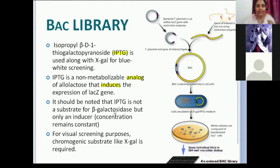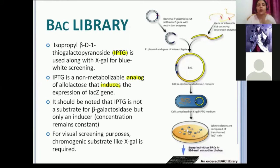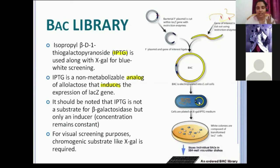Since IPTG is not broken down, the bacteria keeps getting the signal that IPTG is still in the media, and keeps making more and more beta-galactosidase. In the process of making beta-galactosidase, multiple copies are produced. But we don't have a functional LacZ, so beta-galactosidase enzyme won't be produced by those having a clone — but multiple copies of our gene of interest will keep on getting produced.